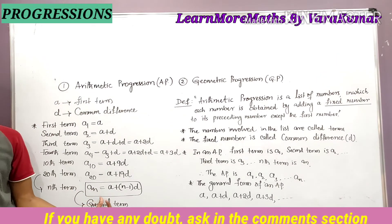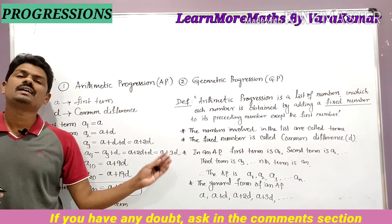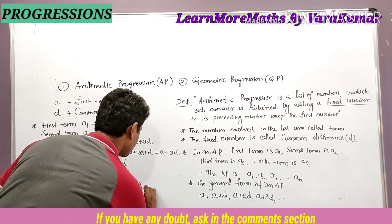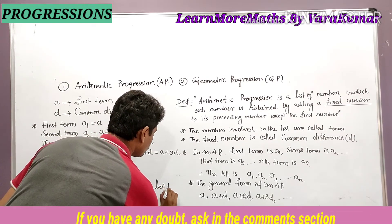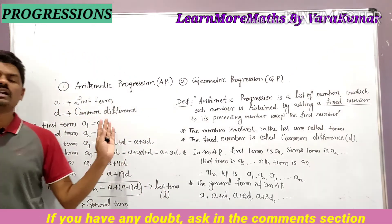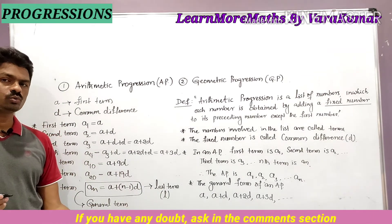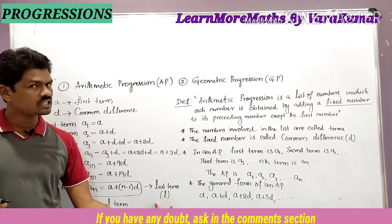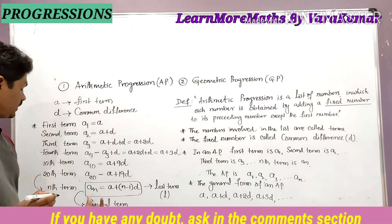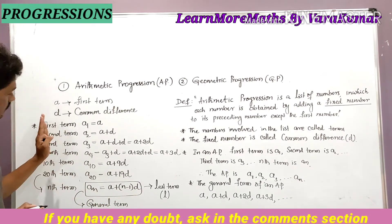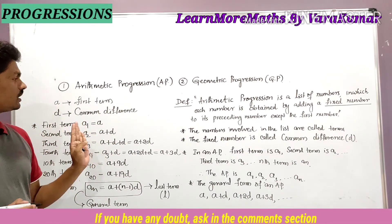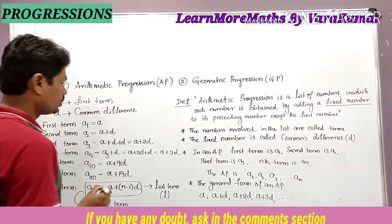The general term of an AP is: an = a + (n-1)d. This is also known as the last term, denoted by small 'l'. So the last term l = a + (n-1)d. We can call it either the general term or the last term. This completes the introduction of Arithmetic Progression.